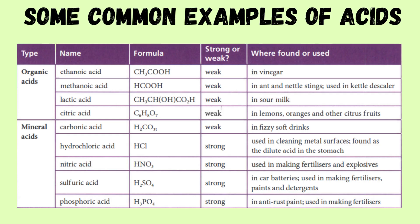Some common examples of acids are shown here in this table. Organic acids, which are weaker, and where they are found or their uses. Then come mineral acids, their uses, and they are stronger acids.